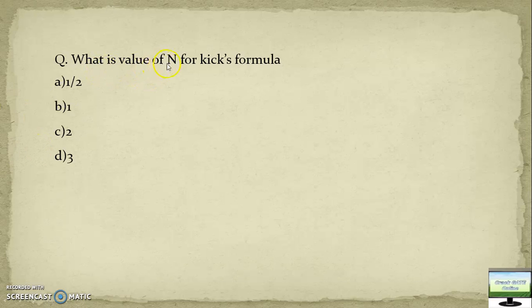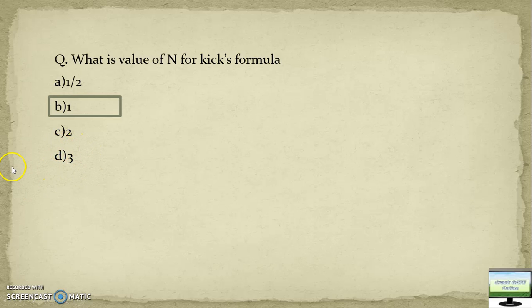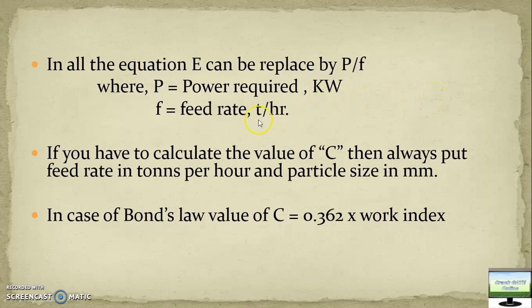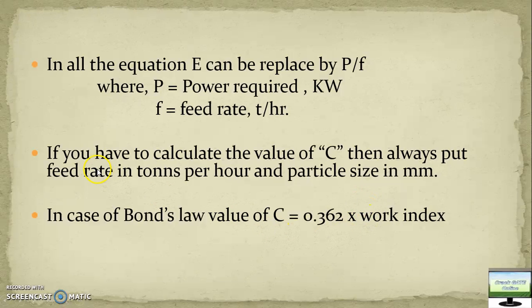Energy E can be converted to power C divided by feed rate F, where C is power required in kilowatt and feed rate is in tons per hour. In those formulas, keep the feed rate in tons per hour and the particle size in mm only — do not use any other units. In the case of Bond's law, the constant C is somewhat different: it equals 0.362 times the work index. In a numerical question, when you are given the work index, you will automatically know the question is about Bond's law.